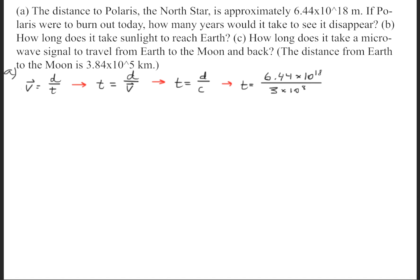Now, when the Polaris star or the North Star burns out, light will emit across the vacuum of space. So the speed at which this light will travel will be the speed of light in a vacuum. So we'll get that T is equal to the distance divided by the speed of light.